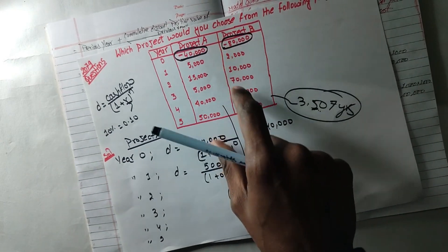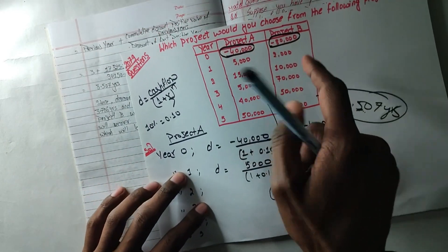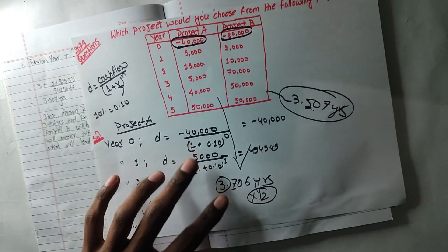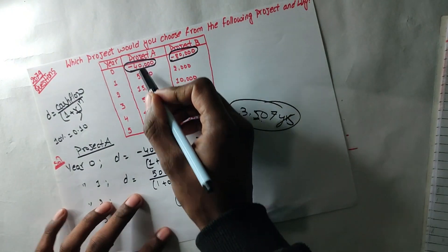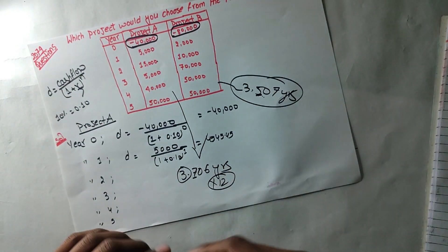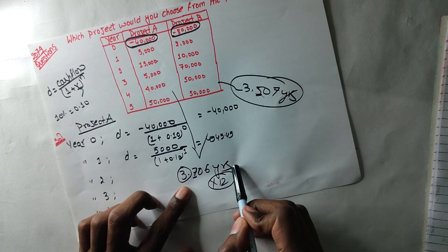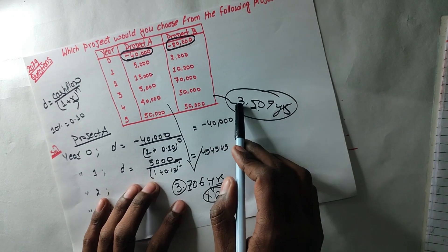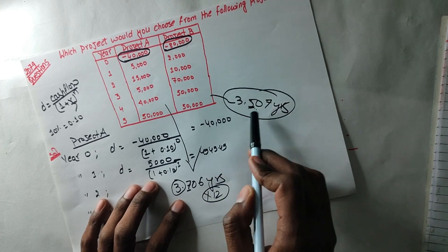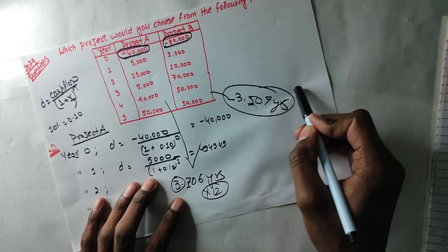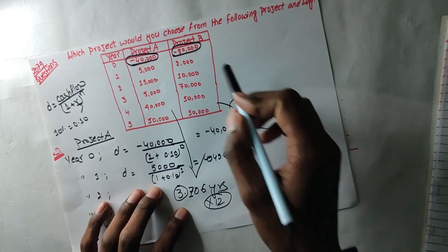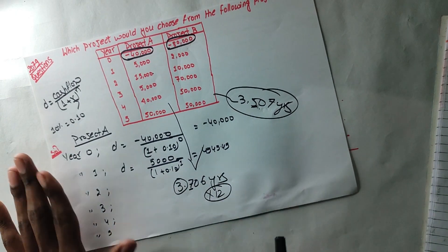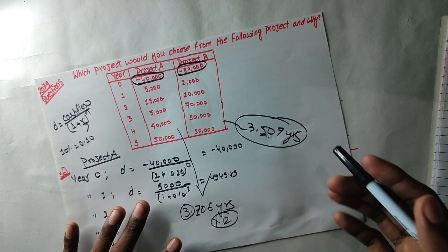We can get the money faster than project B. Our investment is $40,000 for Project A. For Project B the investment is $50,000. The minimum payback period is 3.507 years, so Project B is the preferred choice. Choose the value that is more worthwhile.